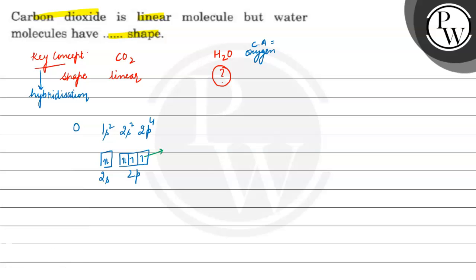If one H binds with this unpaired electron and the second H binds with this electron, you get two lone pairs. If this is O and this is H...